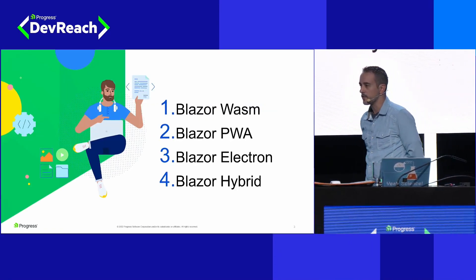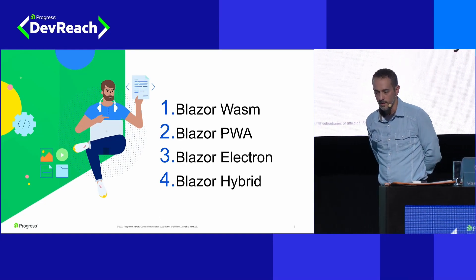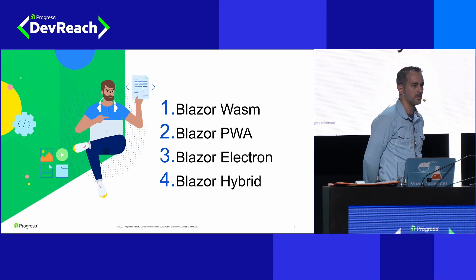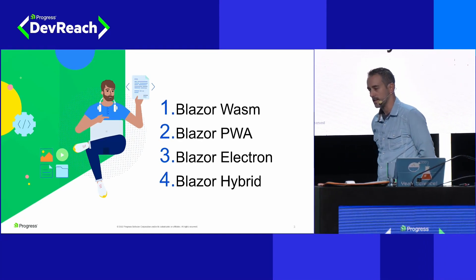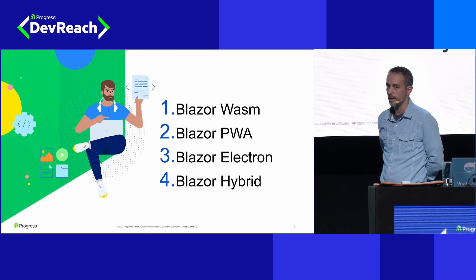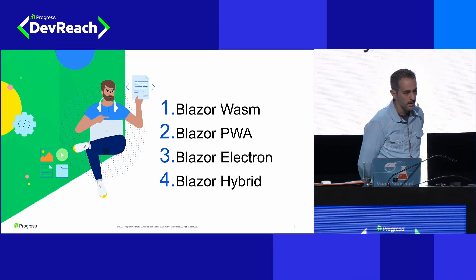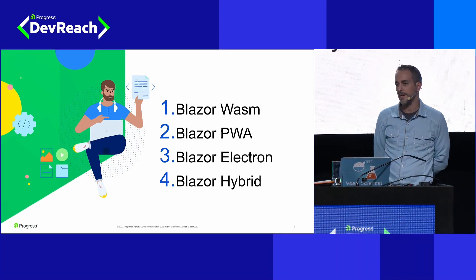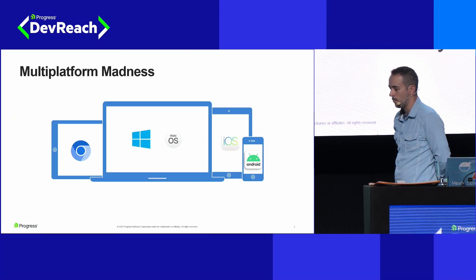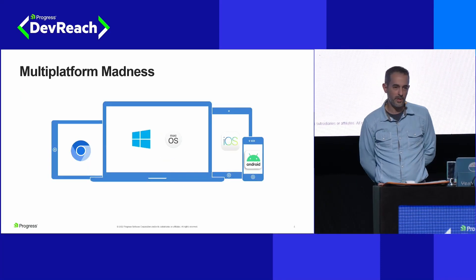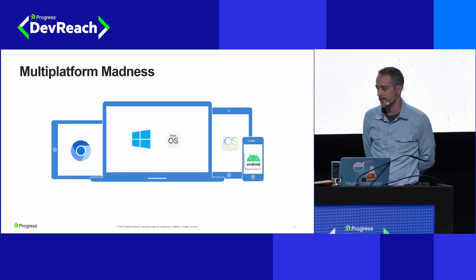We're going to talk about several ways to deploy a Blazor application today. We're going to talk a little bit about Blazor WebAssembly — in case you haven't heard of it, we'll do a little exploration on what exactly it is. We'll talk about Blazor Progressive Web Applications, or PWAs. We'll also talk about Blazor on Electron and Blazor Hybrid. The whole point of all of this is to try to make sense of this multi-platform madness that we have going on.